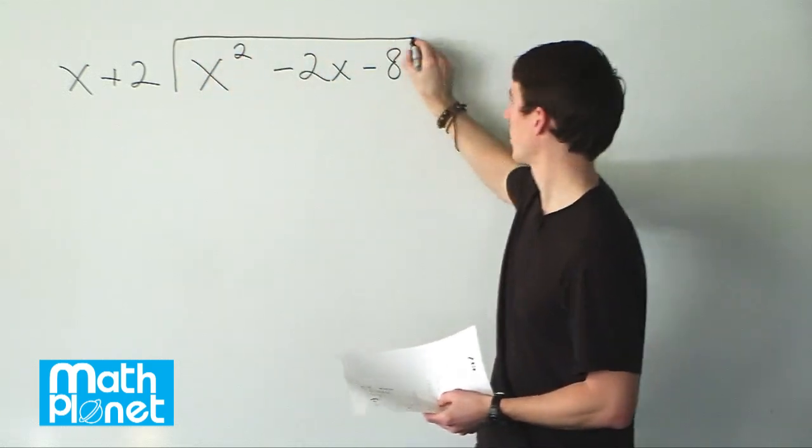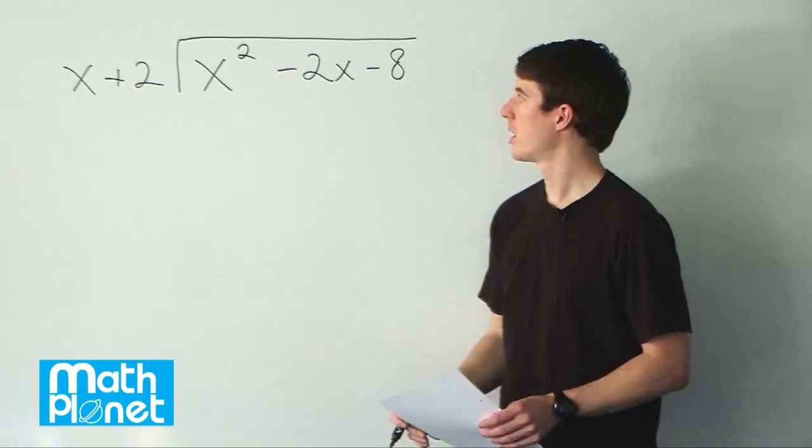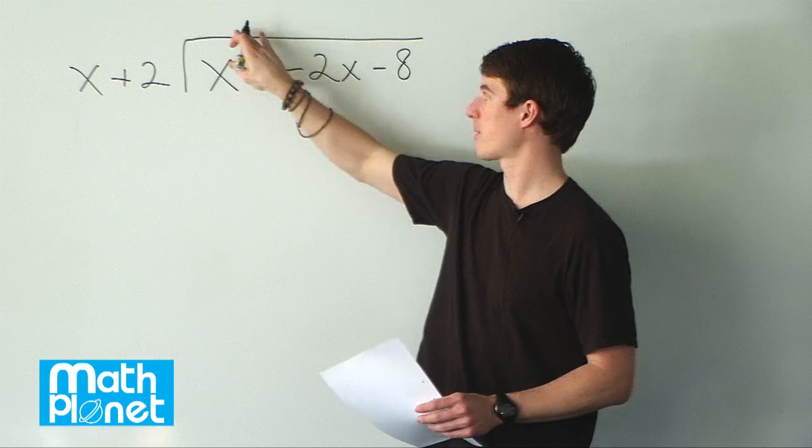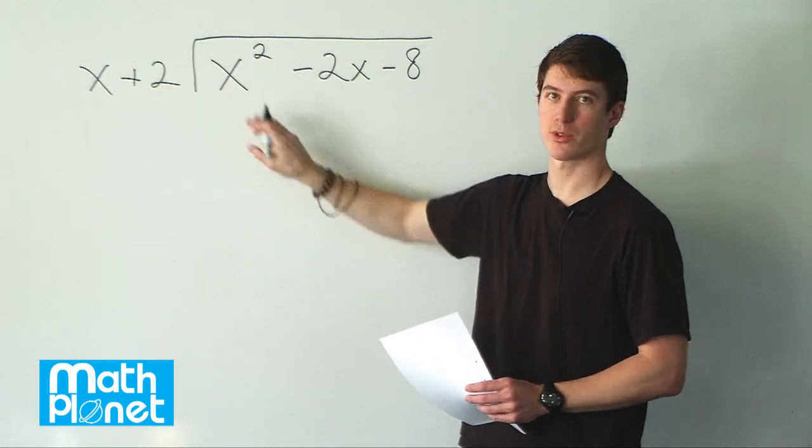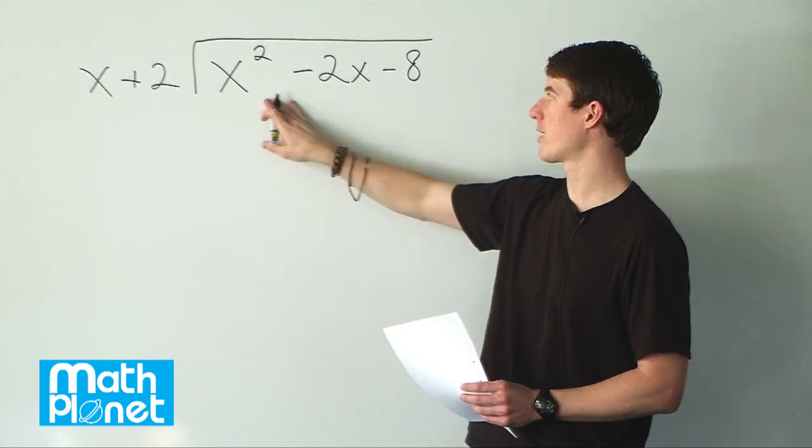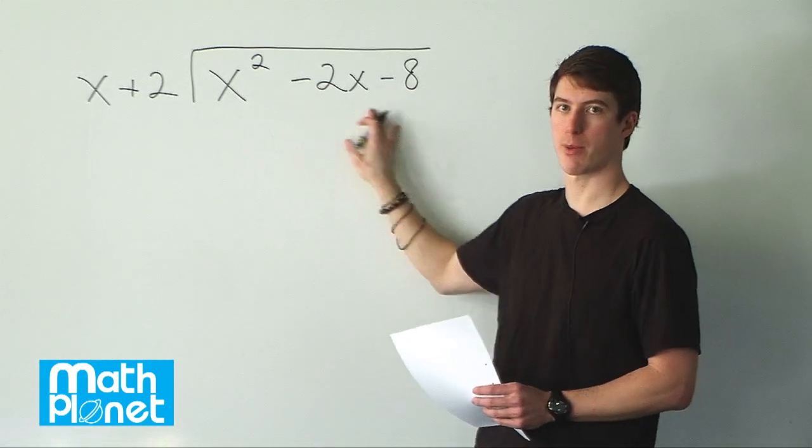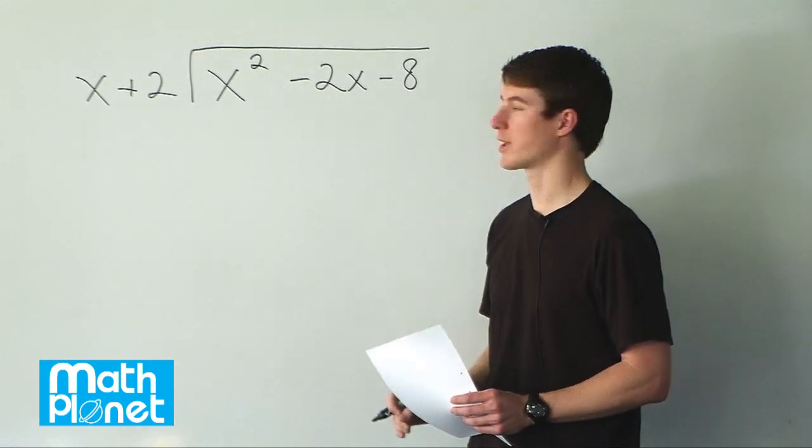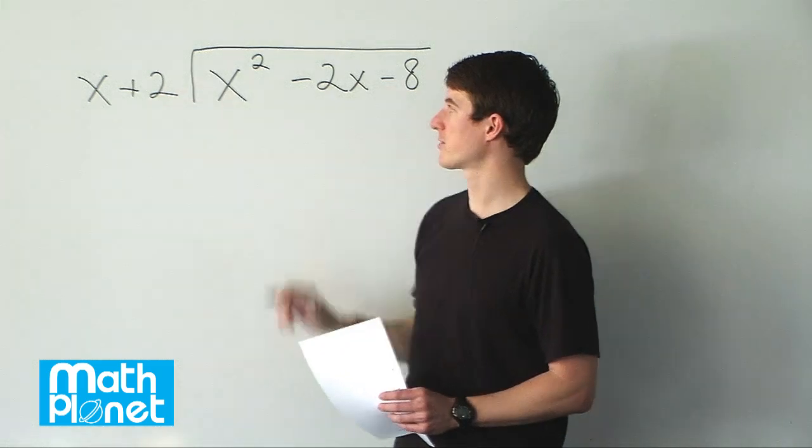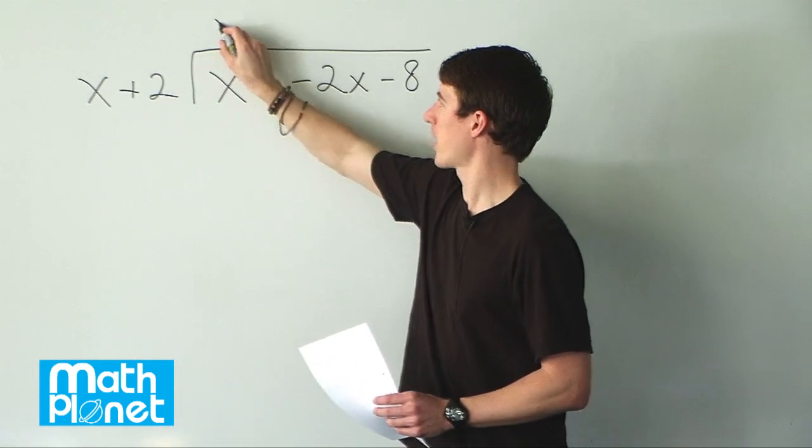So it looks just like long division, but it's polynomial division. What we need to find is something that multiplies by x that can eliminate this highest order term. It's important that we have this written in descending order of power. So what times x gives us x²? Well, of course it's just x.